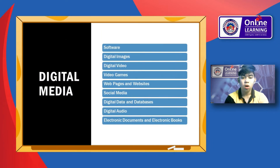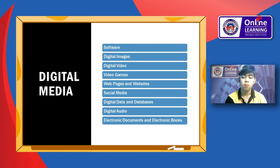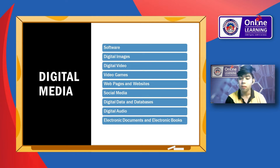So what are the examples of digital media? Examples of digital media include software, digital images, digital video, video games, web pages and websites, social media, digital data and databases, digital audio such as MP3, electronic documents, and electronic books or e-books.